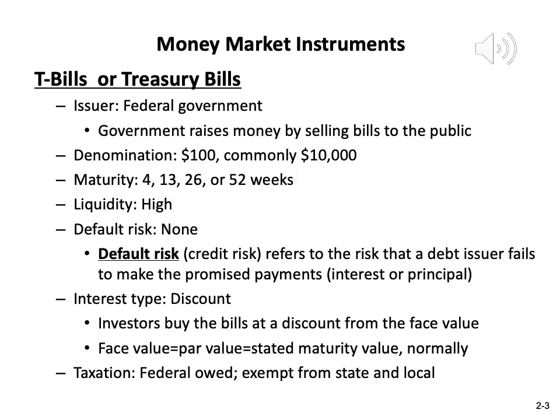For example, $100, $200, $500, or more commonly $10,000. If you want to buy $103, you can't, because it has to be an incremental of at least $100 — multiples of $100. The maturity of the treasury bills are 4, 13, 26, or 52 weeks. Or you can think of it as roughly one month, one quarter, half a year, or one year.